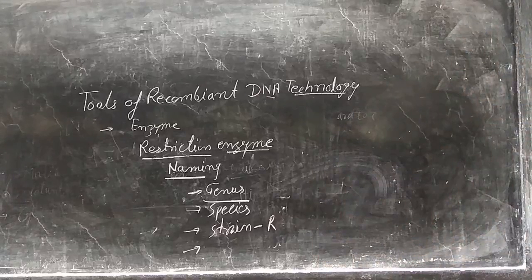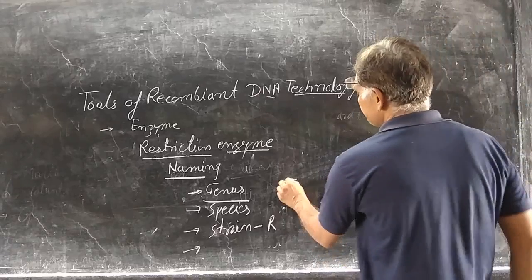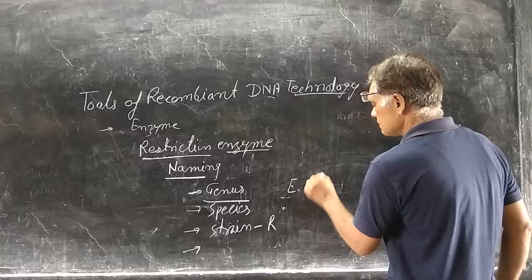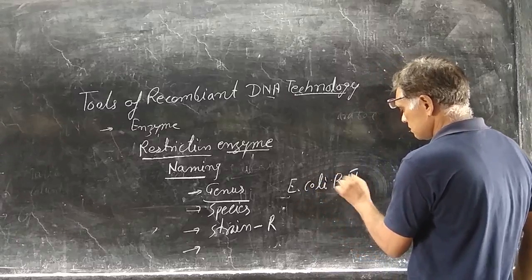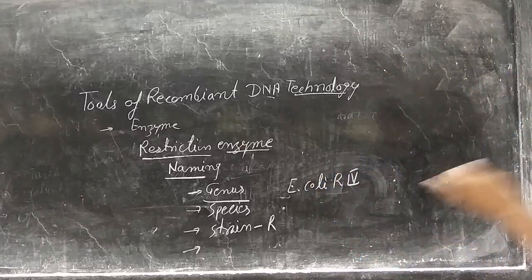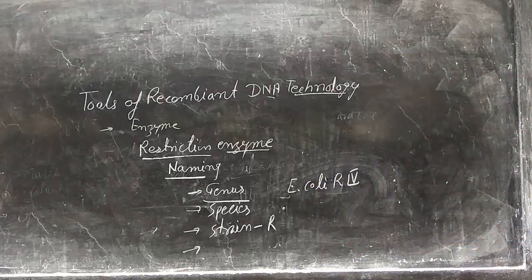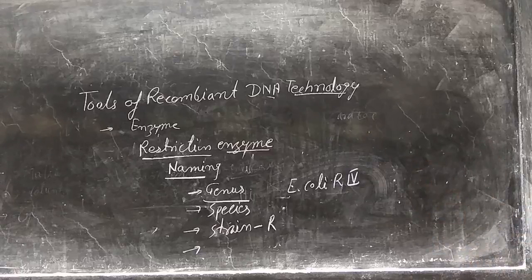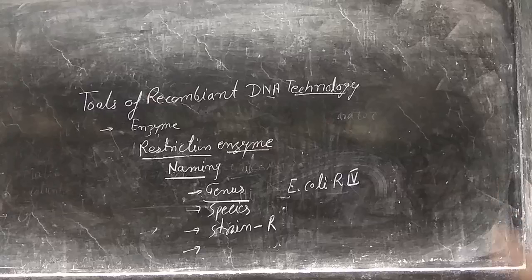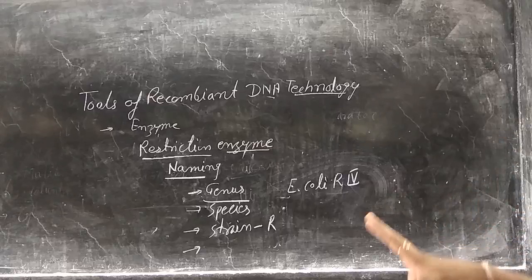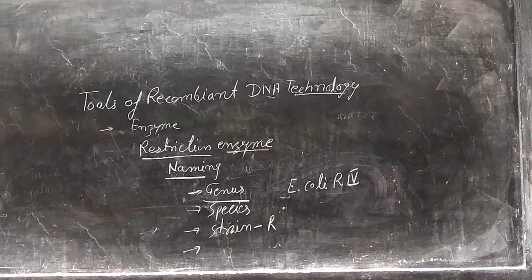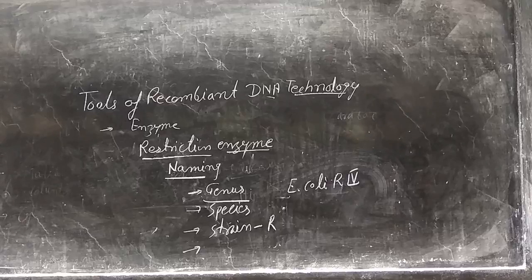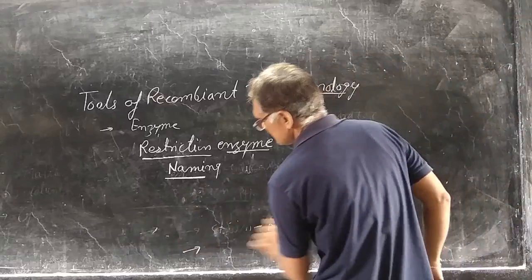For example: EcoRI — here E is obtained from Escherichia, coli is the species, R is the resistant strain, and it is the fourth number of enzyme found from that particular bacteria E. coli. In this way, the naming of restriction enzymes is done.